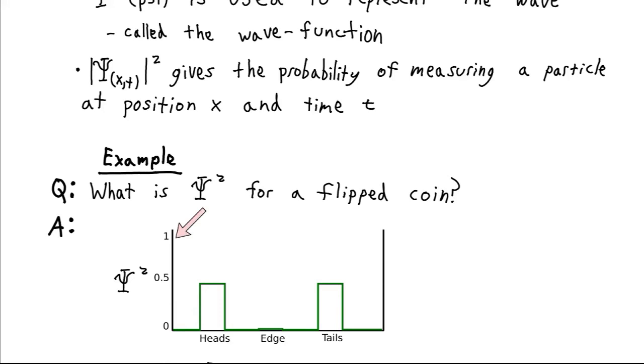So about half the time our flipped coin is going to wind up being heads, and about half the time it's going to wind up being tails. And about 1 in every 6,000 times it's going to land on its edge. And while it's flipping in the air, we don't know which is which. All we can do is write down these probabilities.